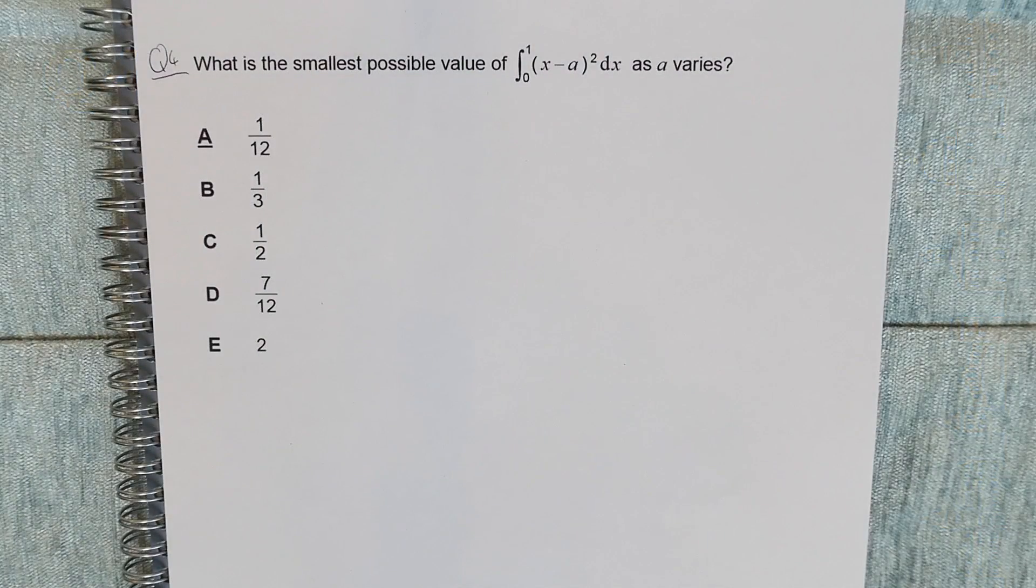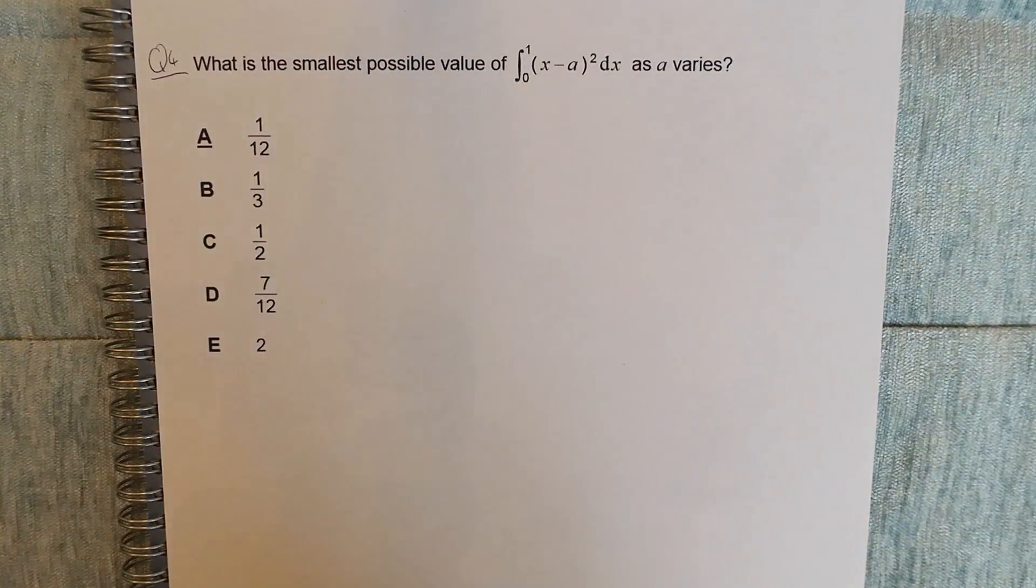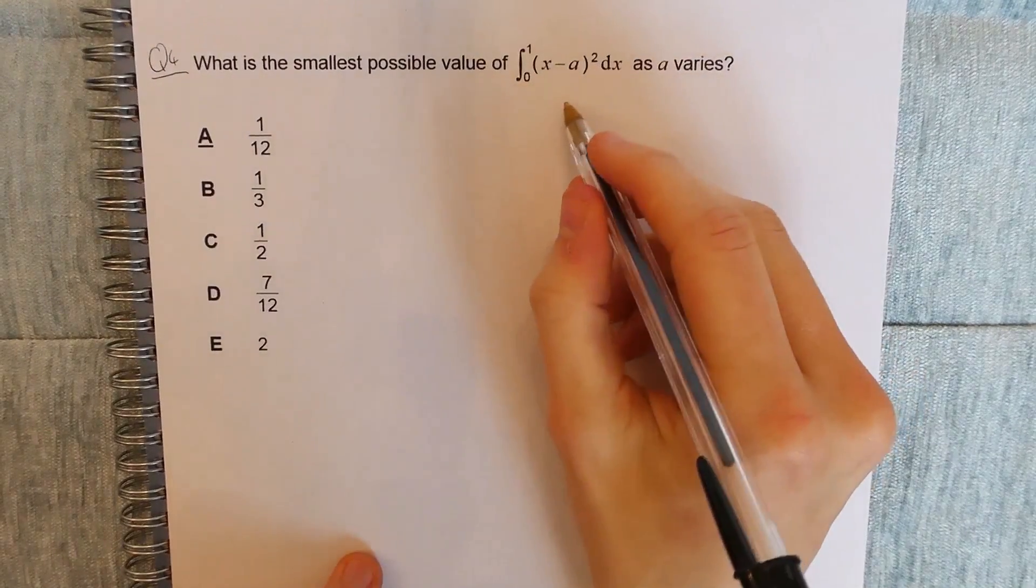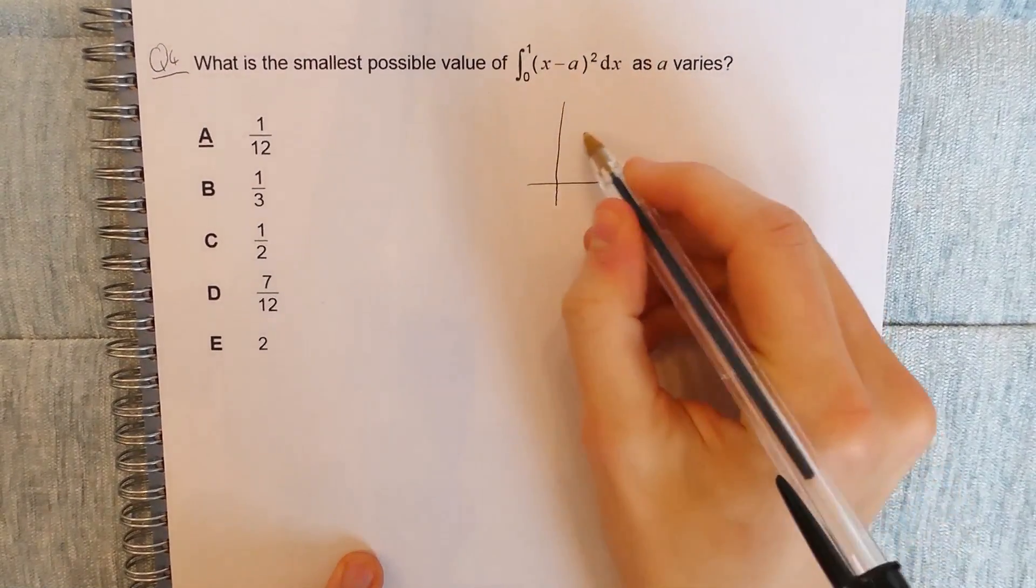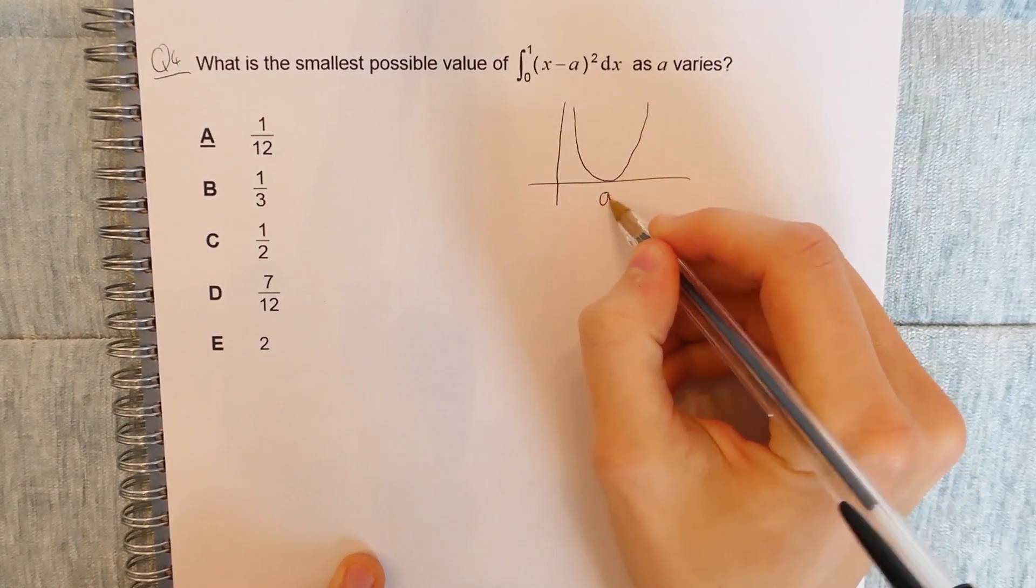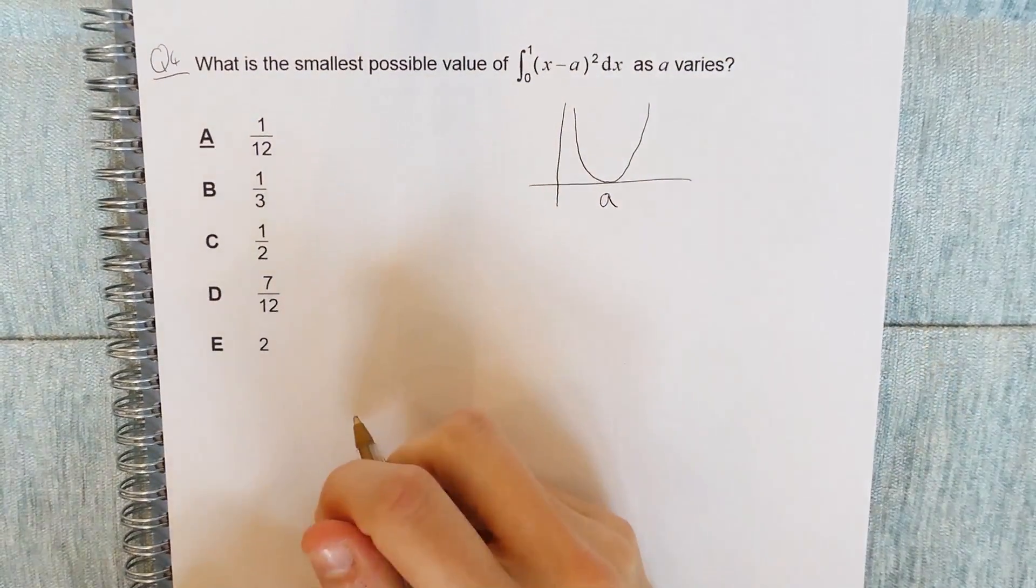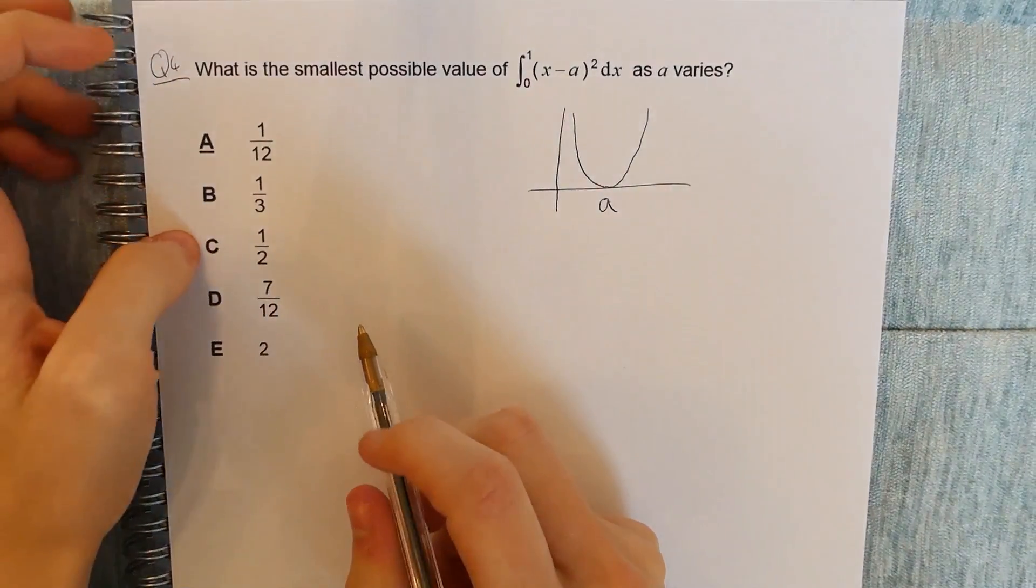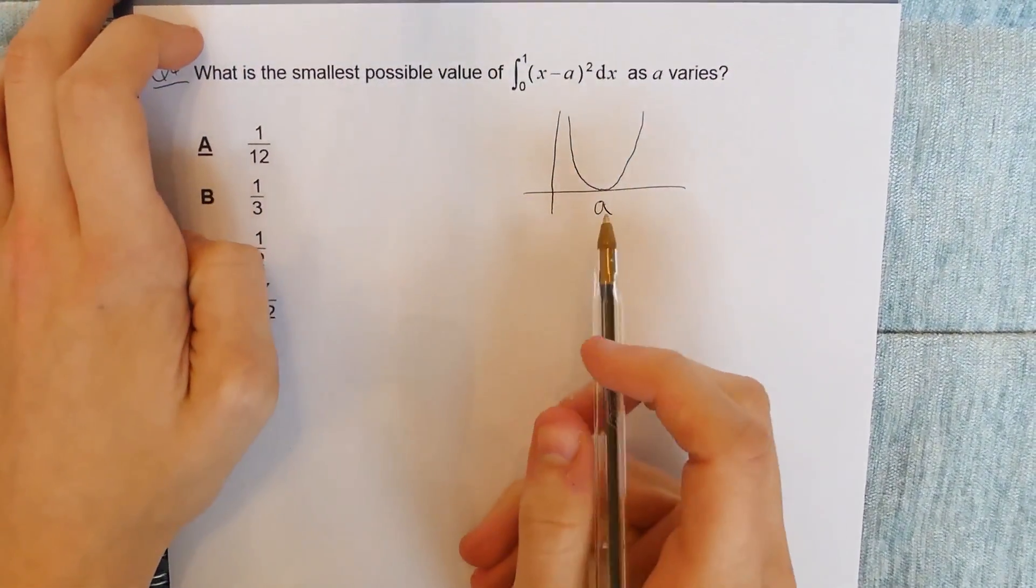Question 4. What is the smallest possible value of the integral from 0 to 1 of x minus a all squared with respect to x as a varies? So let's think about what that graph might look like first. So what this graph basically is, is a standard quadratic but displaced by a to the right.